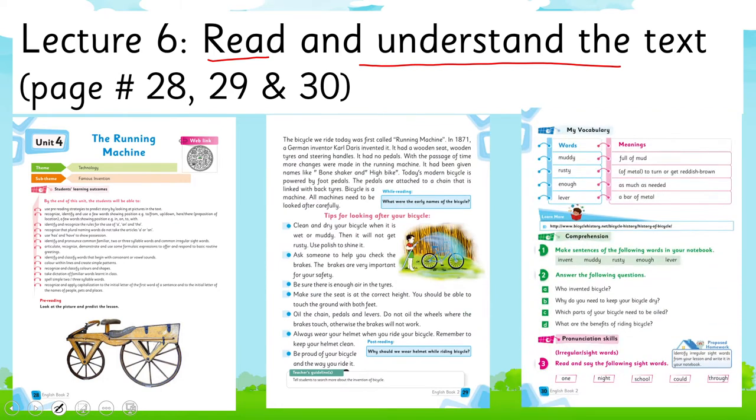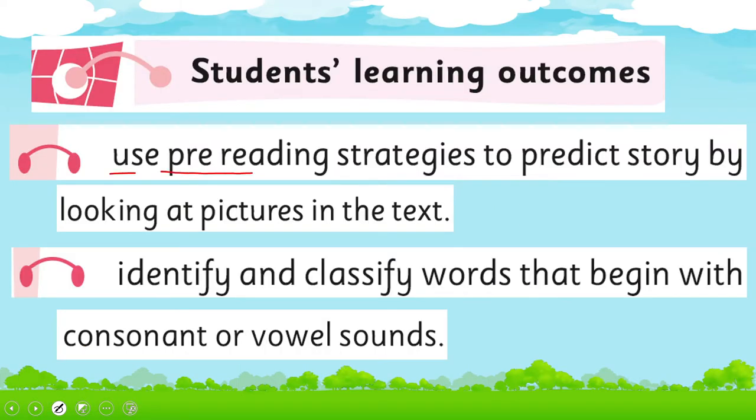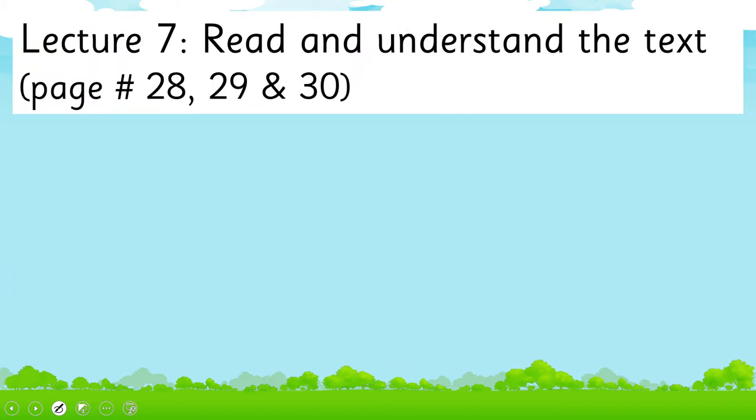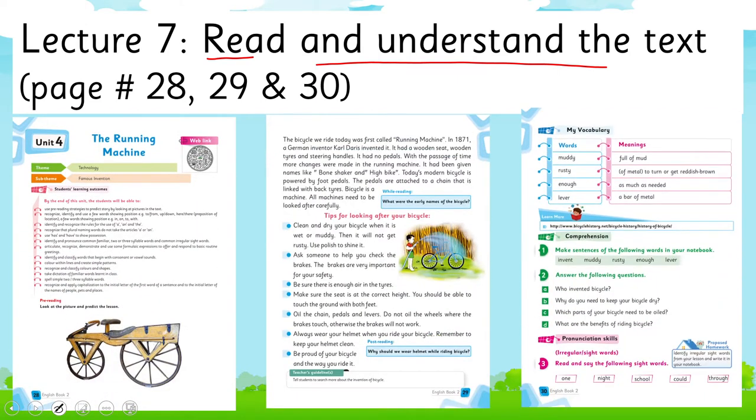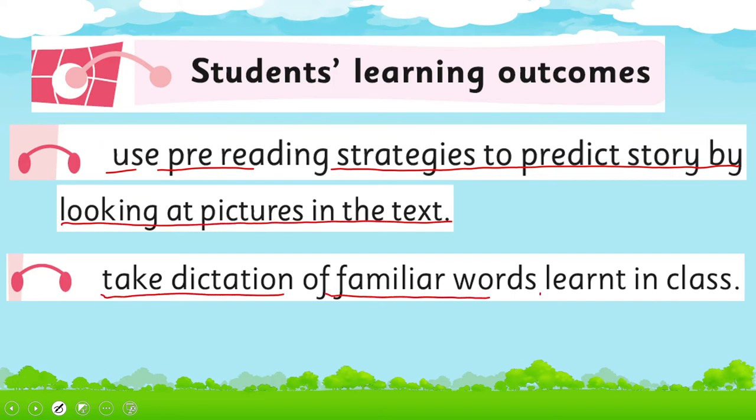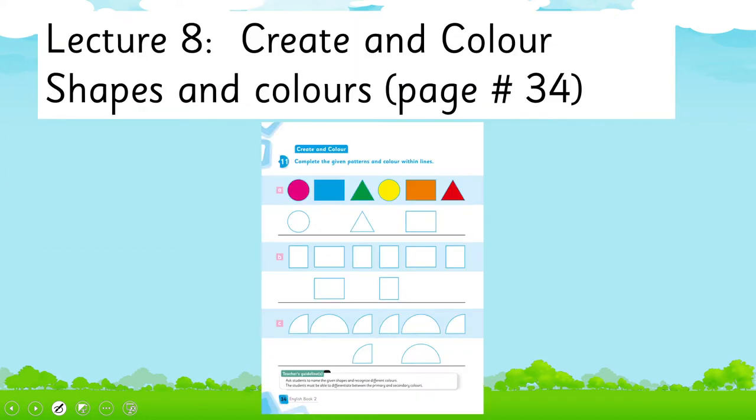We'll cover the SLOs to use pre-reading strategies to predict story by looking at pictures in the text, and identify and classify words that begin with consonant or vowel sounds. Lecture 7, we'll continue reading and understanding the text. Again, page 28, 29, and 30 will be covered. We'll use pre-reading strategies to predict story by looking at the pictures in the text, and we'll take dictation of familiar words learned in the class.